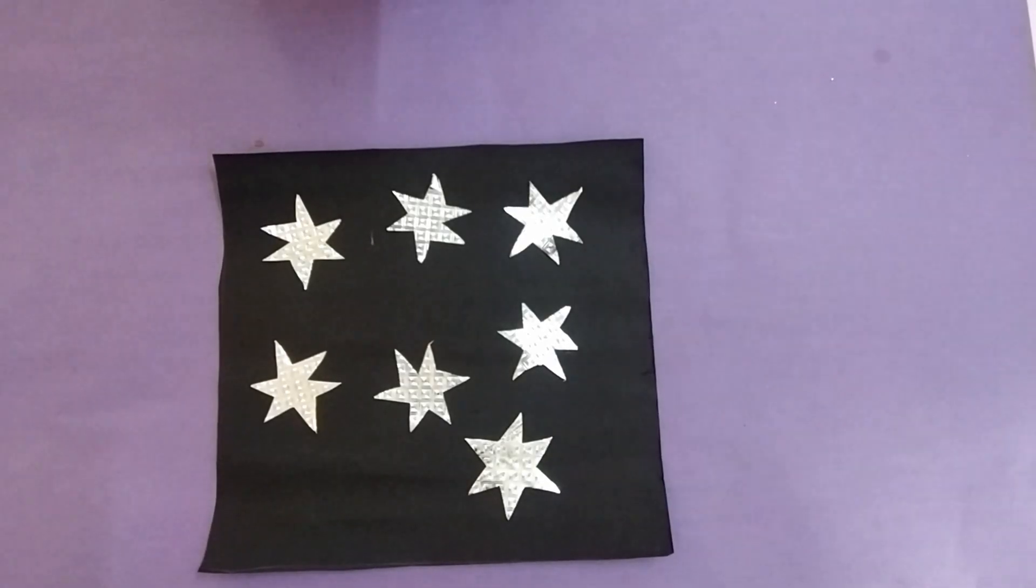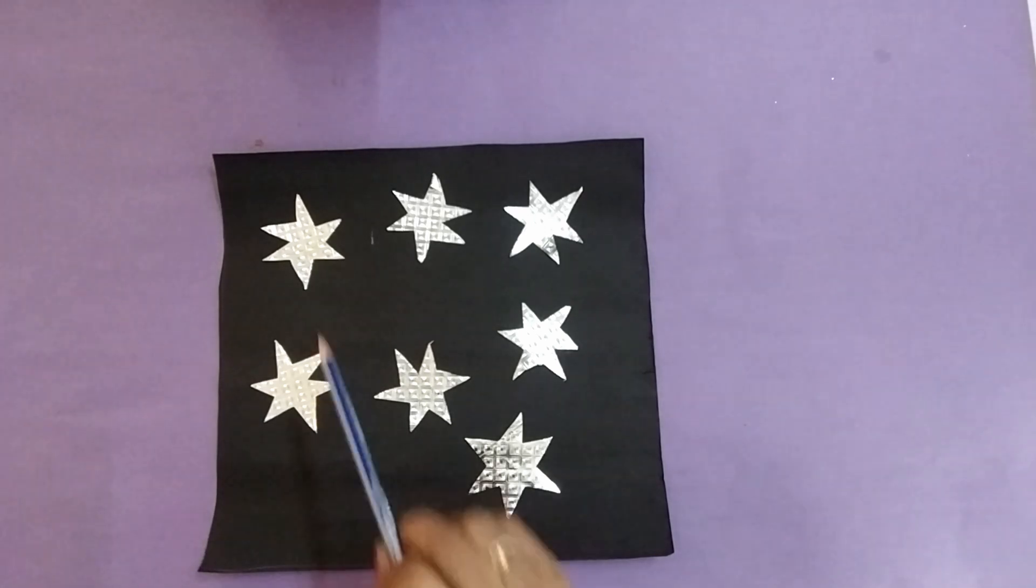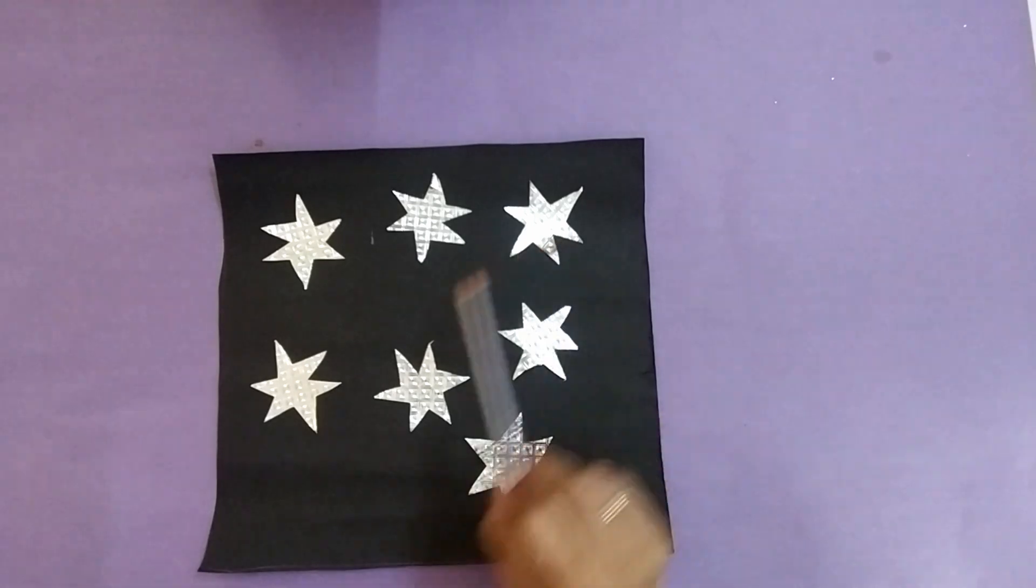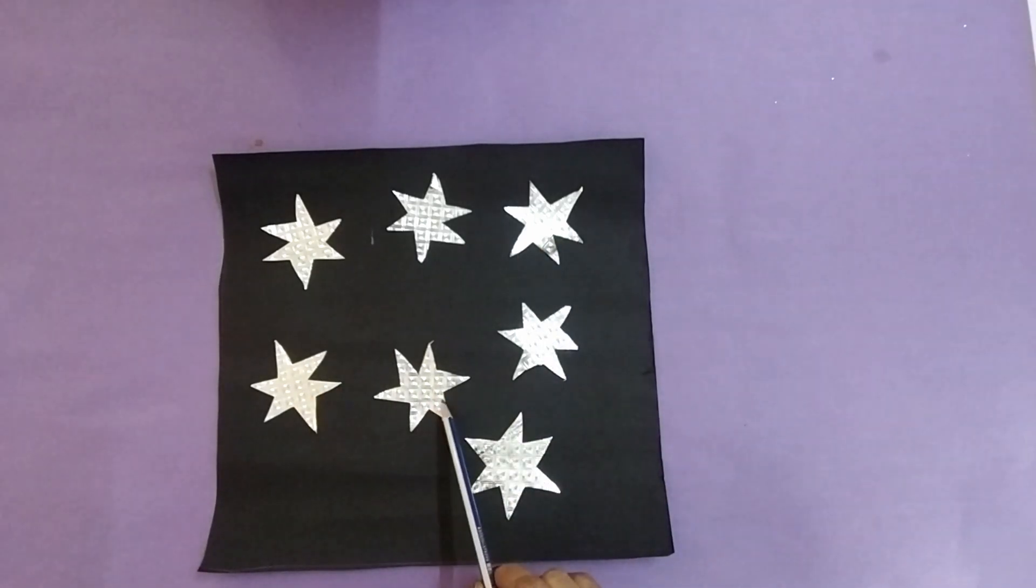Children, you know what are these? These are stars. Let's count stars. One, two, three, four, five, six, seven.